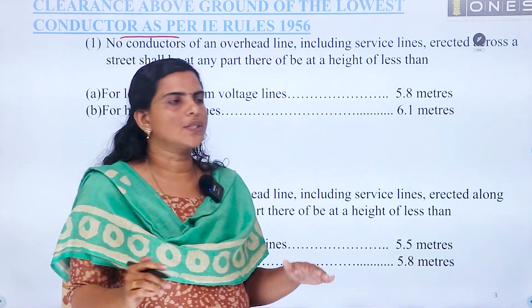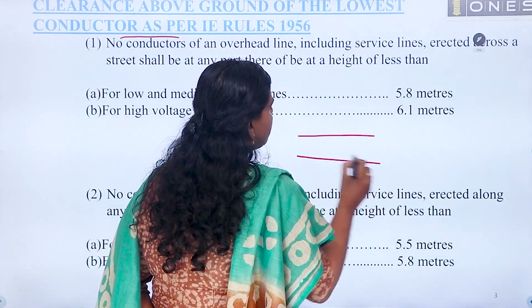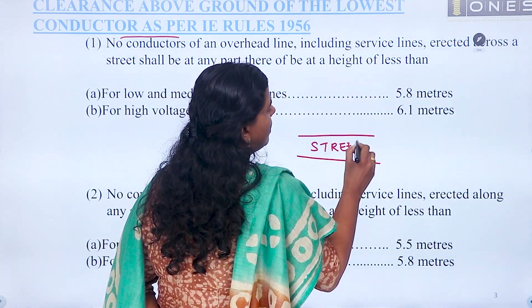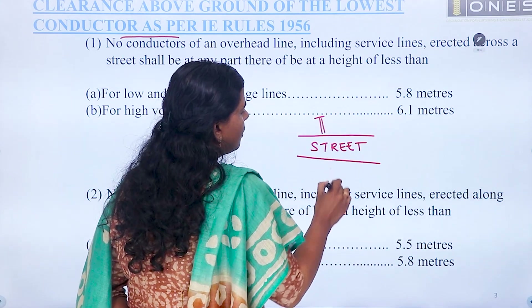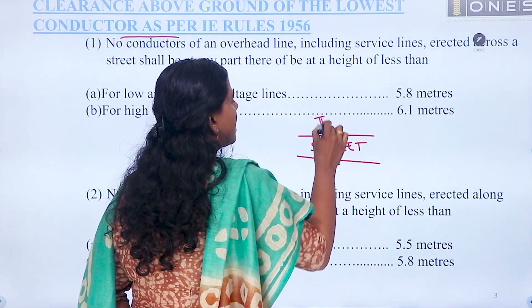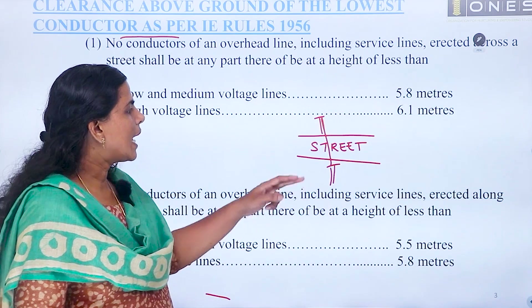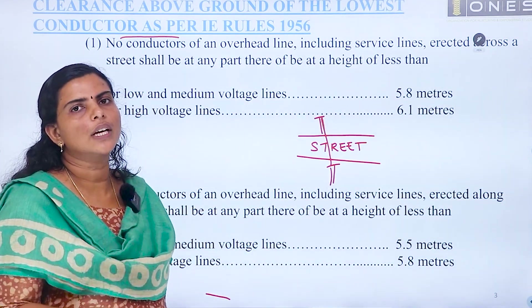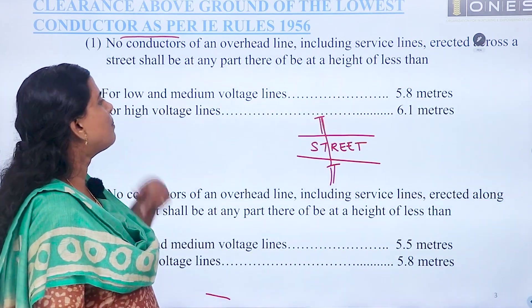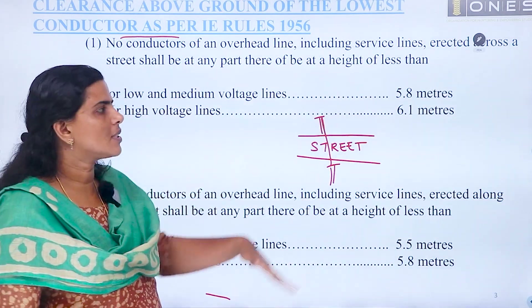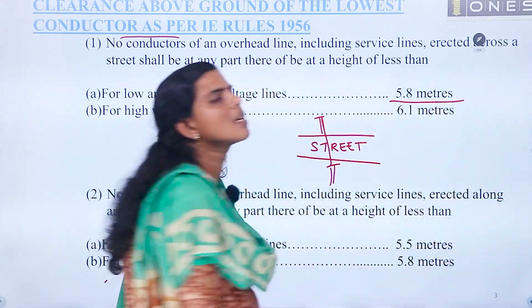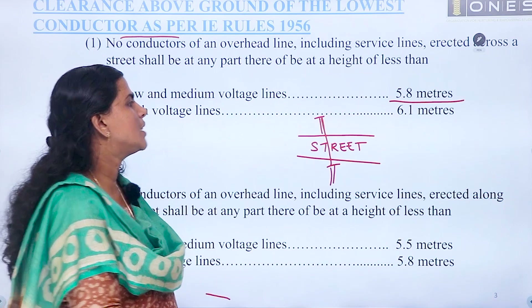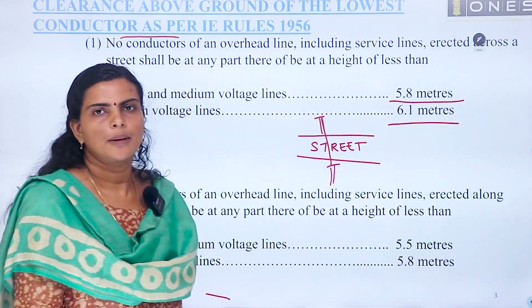Across the street — suppose this is the street along the road where the vehicles travel. If there is a line crossing across the road, the height of the line from the ground depends on the voltage level. For low and medium voltages across the street, the ground clearance should be at least 5.8 meters. For high voltages, it should be at least 6.1 meters.